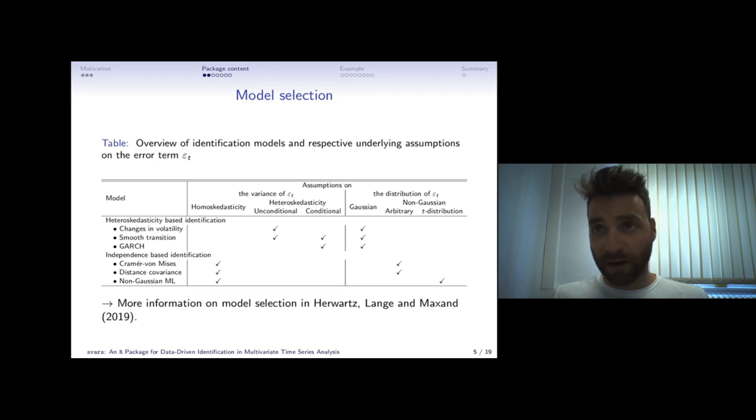But first you may ask why is it necessary to have so many different identification models which all do the same job in the end estimating the structural shocks. Well this depends on your data structure because these models have all distinct assumptions on your data.